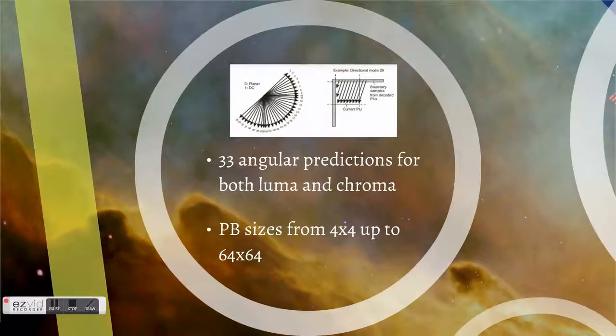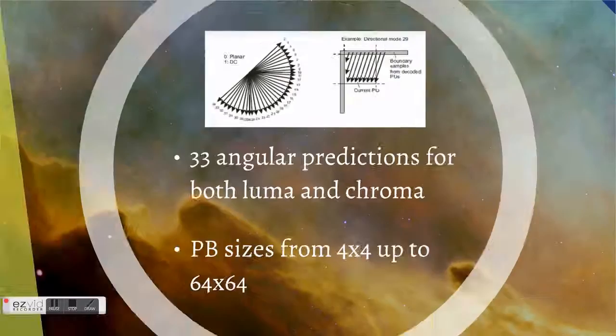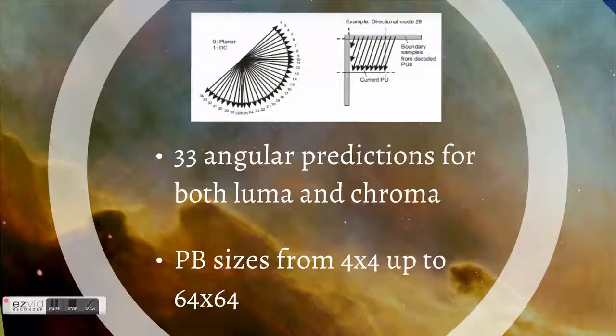For the intra prediction, as far as you know, the intra prediction is the first part of the encoder. In H.265 by comparing to H.264, there are already introduced 33 angular predictions for both luma and for chroma. In addition, planar and DC.